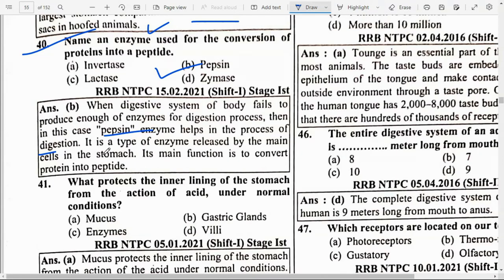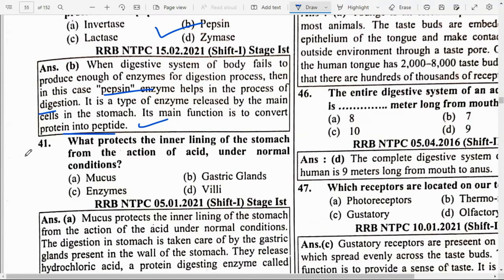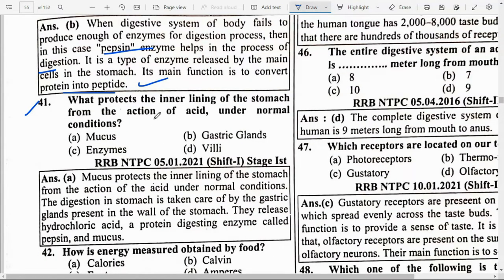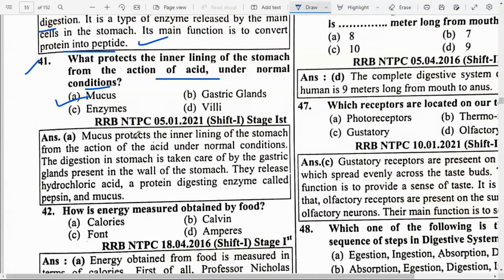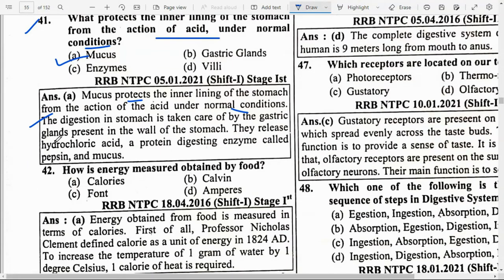When the digestive system fails to produce enough enzymes, pepsin enzyme helps in the digestion process. Its main function is to convert protein into peptides. What protects the inner lining of the stomach from the action of acid under normal conditions? Option D — Mucus. Mucus protects the inner lining of the stomach. The gastric glands present in the wall of the stomach release hydrochloric acid, the protein-digesting enzyme pepsin, and mucus.